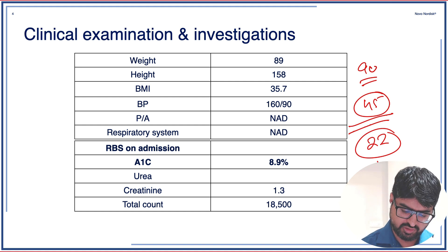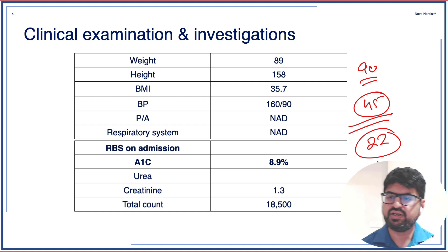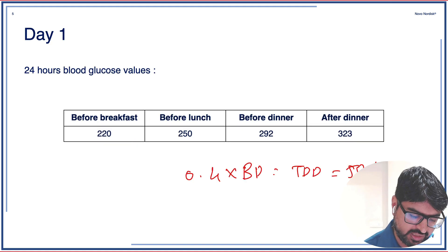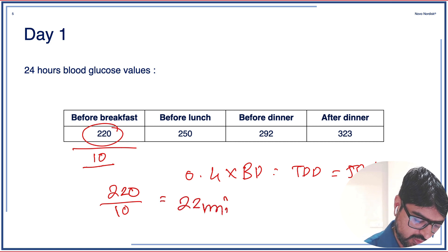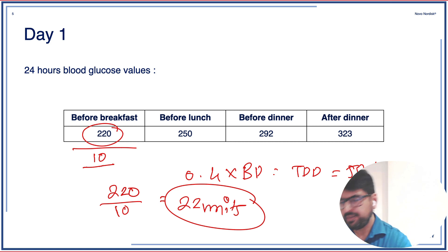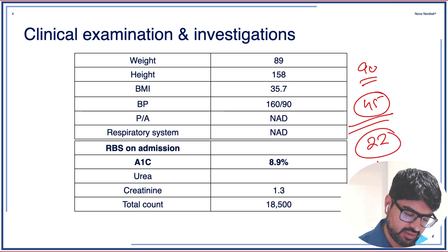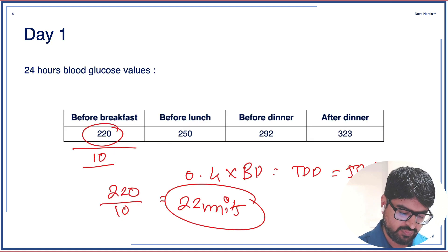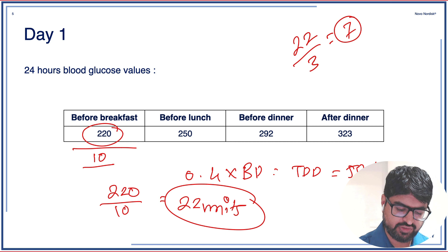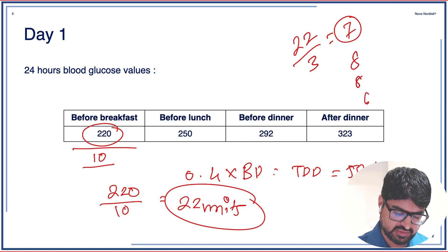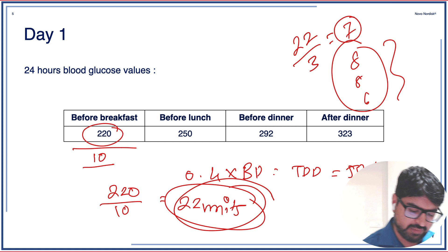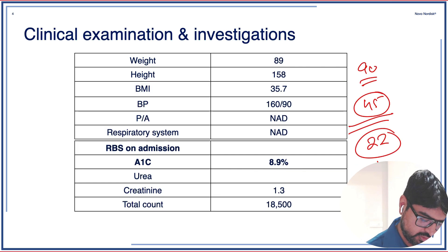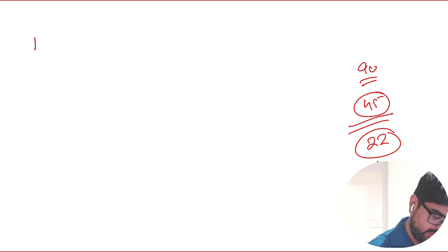This is one way to calculate basal insulin. The other method I use in clinical practice is fasting sugar divided by 10. The fasting sugar here is 220, divided by 10 equals 22 units — both methods give almost the same value. The bolus insulin dose is then calculated as the basal dose divided by 3: 22 divided by 3 is approximately 7 units, and I round this to 8, 8, and 6 units for the three meals.